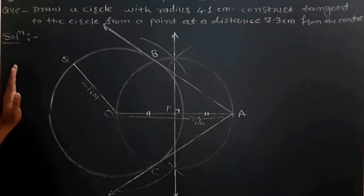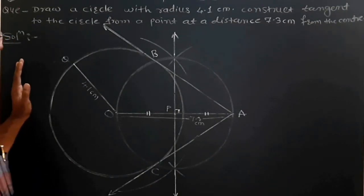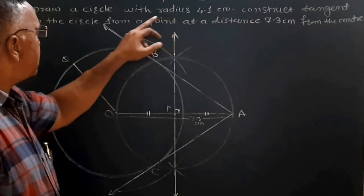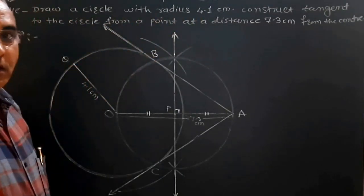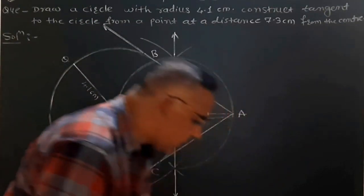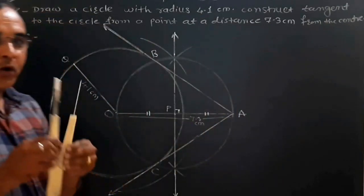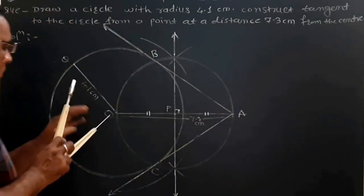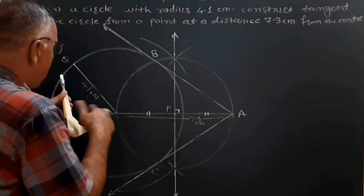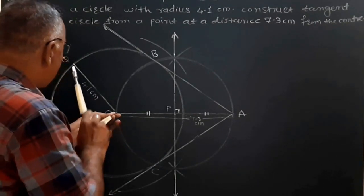In this problem, first draw a circle with radius 4.1 cm. Take 4.1 cm distance in a compass and then draw the circle of 4.1 cm radius in this way.